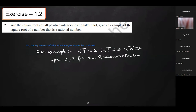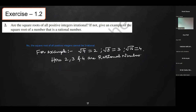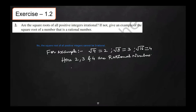Sometimes we'll get a rational number also. For example, √4 = 2 and that is a rational number. √1 is also 1, which is also a rational number.